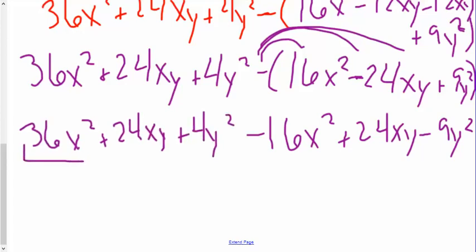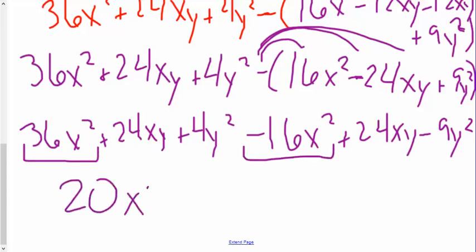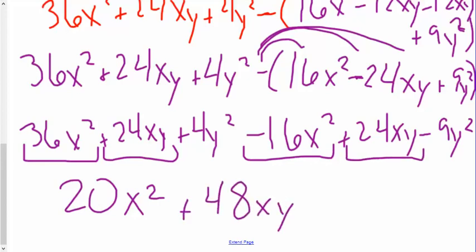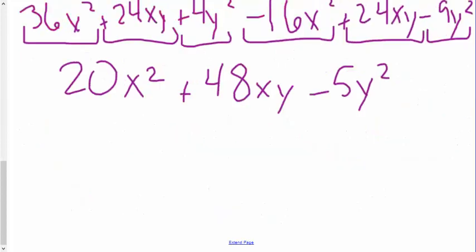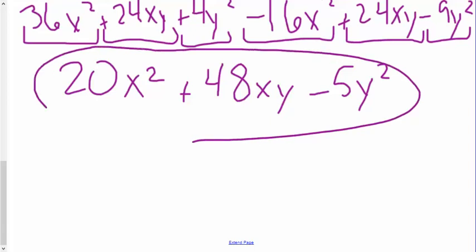Combining like terms: 36x squared minus 16x squared gives me 20x squared. I have 24xy plus 24xy, which gives me 48xy. Then positive 4y squared minus 9y squared gives me negative 5y squared. Remember, x's come before y's and x squared terms come before x terms, so that is my final answer.